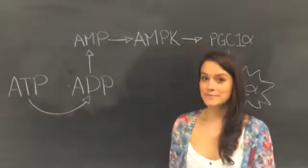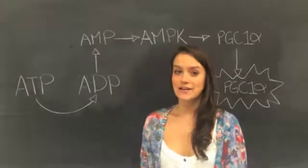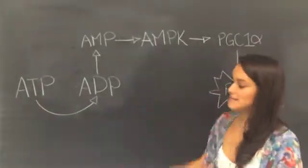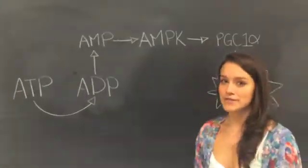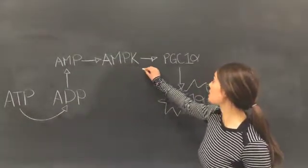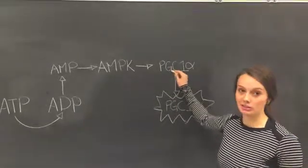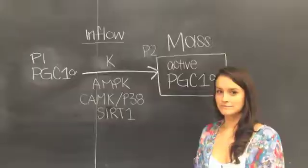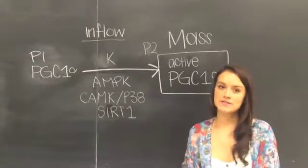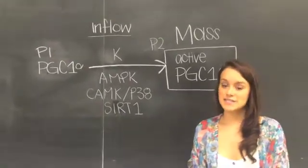Because of their similar mitochondrial content and energetic status, the ATP breakdown and the AMP and ADP buildup would be the same for both individuals. Therefore, AMPK's ability to increase inflow into activated PGC-1-alpha would not be lower in obese individuals. AMPK would not be the reason we see impaired increases in PGC-1-alpha in obese individuals.